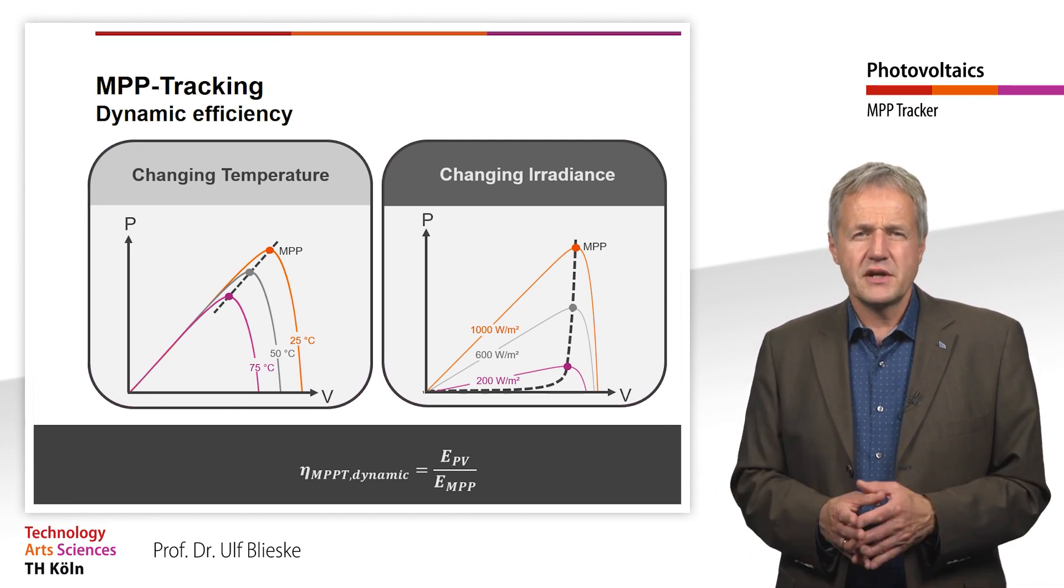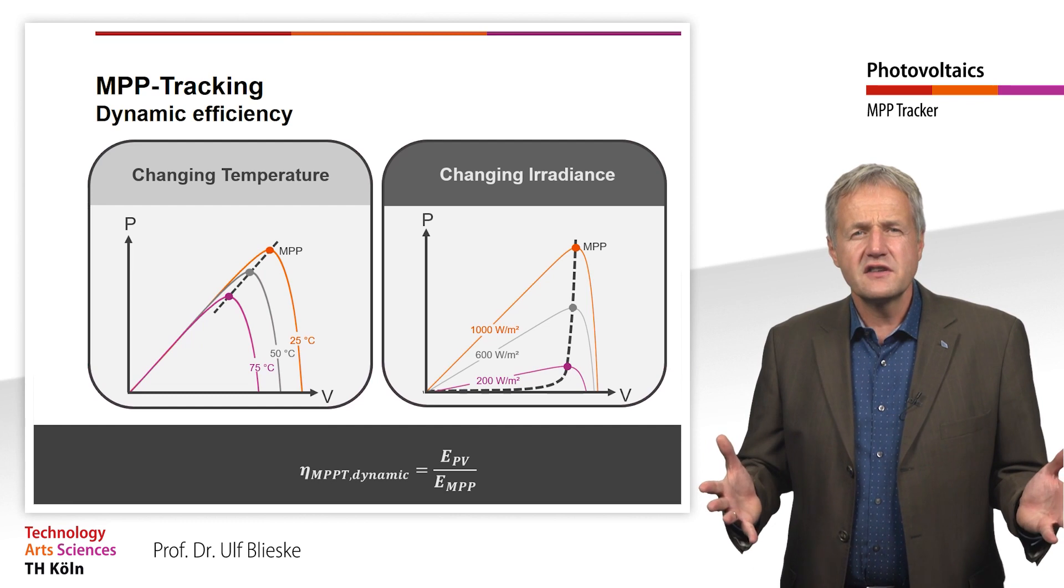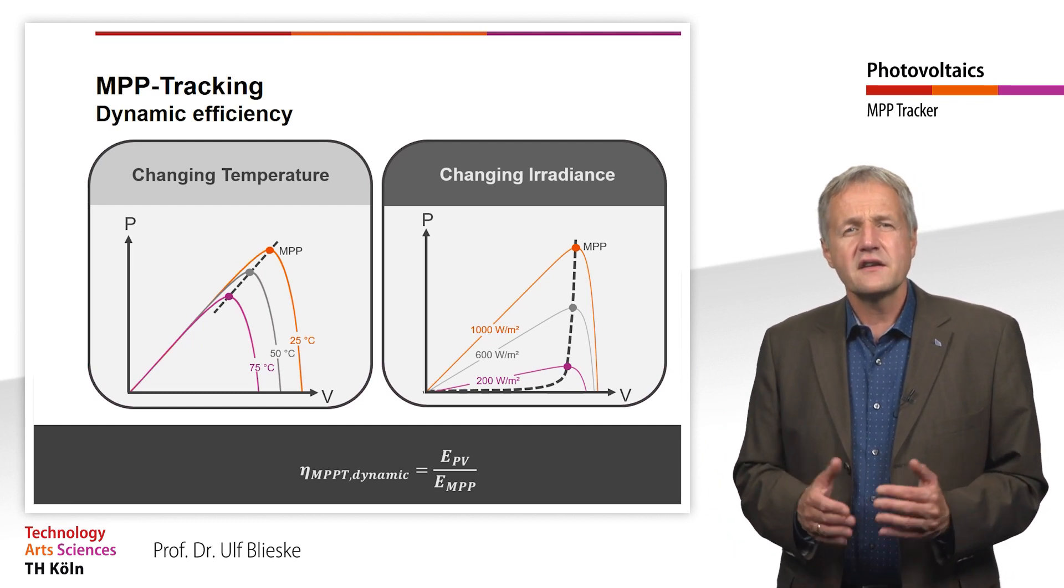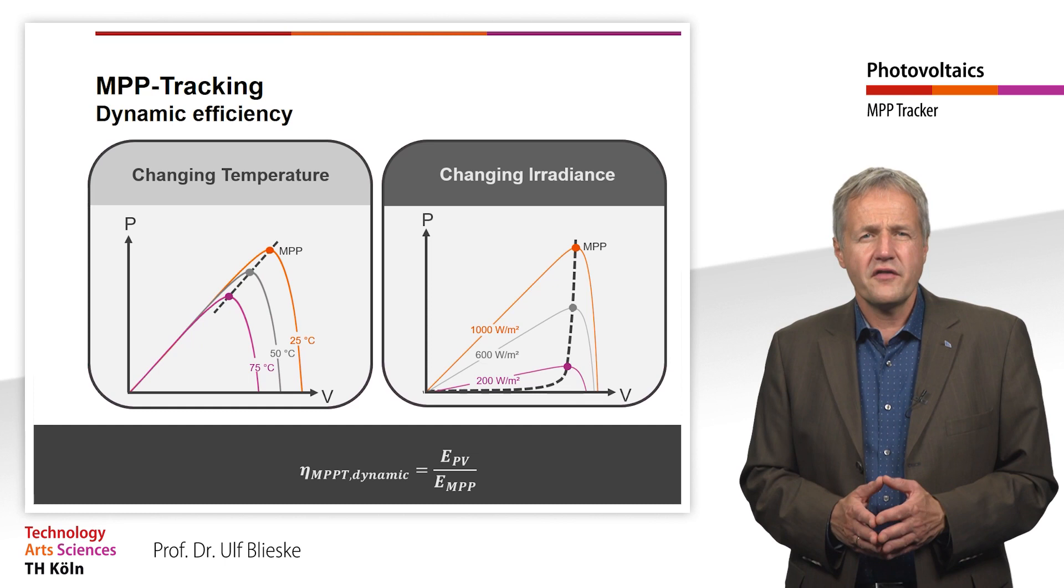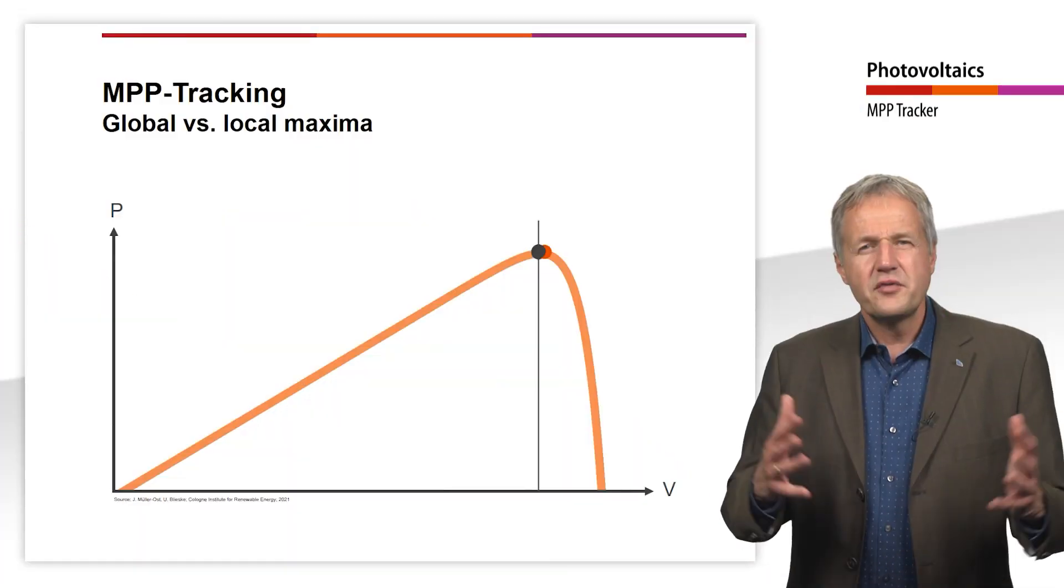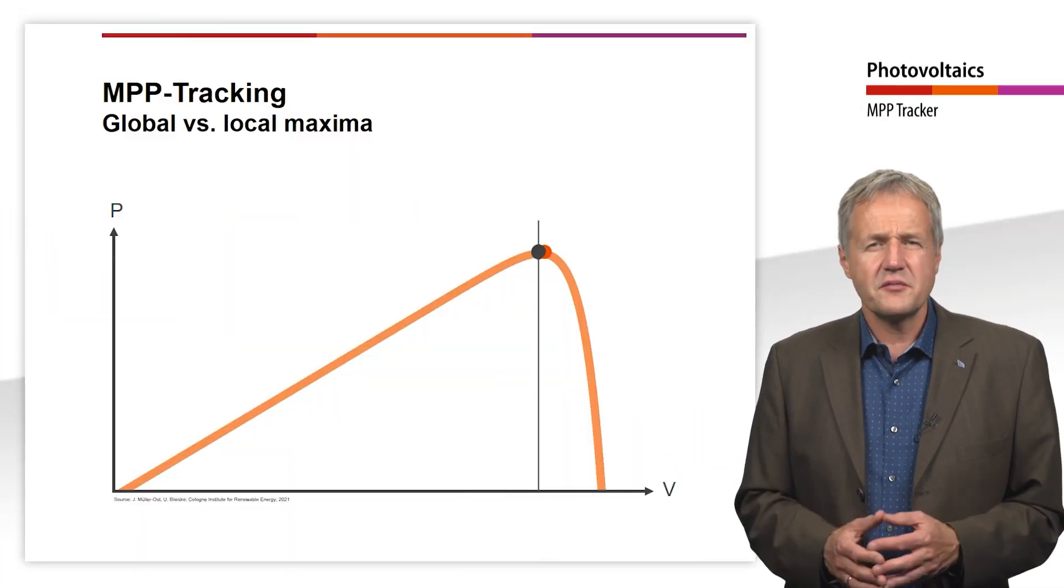With a very good MPP controller, the dynamic efficiency is only slightly lower than the static one and is still over 99.5%. In the previous considerations we have made an important assumption.